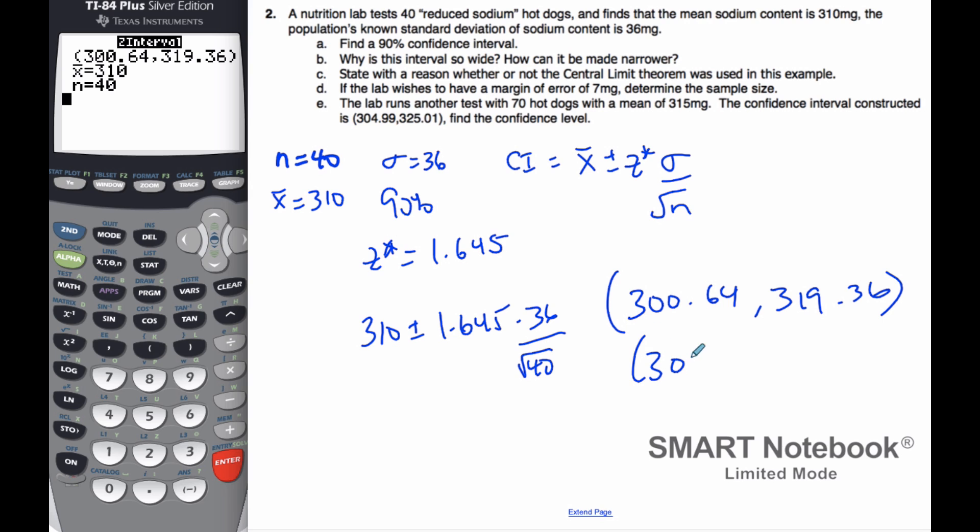The three significant figures will be 301, 319 milligrams. There's our confidence interval, and this is part A finished.